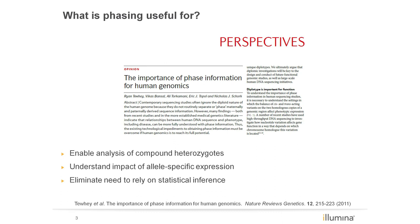I'll briefly discuss a couple here, but for a more comprehensive review of why phasing is important, I'll point you to a reference published in Nature Reviews Genetics in 2011. In the previous slide, we described a situation whereby phasing can help understand whether two heterozygous variants in a gene occur together in one copy of a gene, or one in each of two copies of a gene. This is referred to as compound heterozygous.